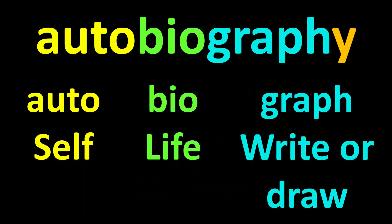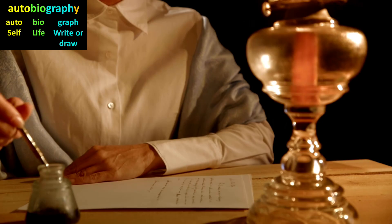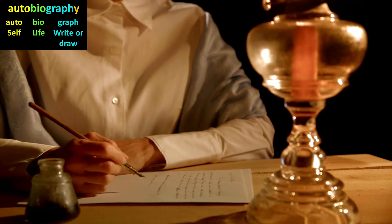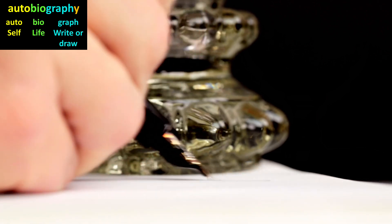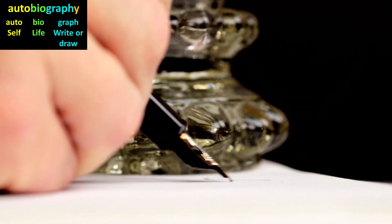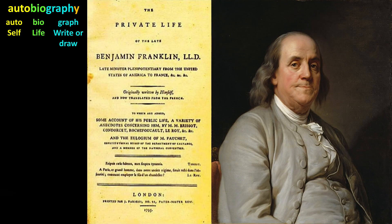The word 'autobiography' has three word parts. The first is the word part 'auto,' which means self. An autobiography is also about someone's life's story, but the author is the person who the book is about. For example, Benjamin Franklin wrote this book about his own life — this is an autobiography.